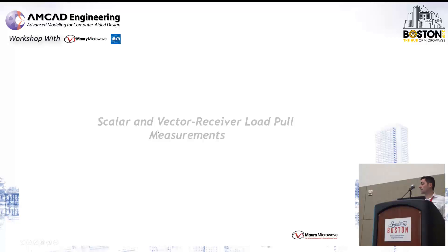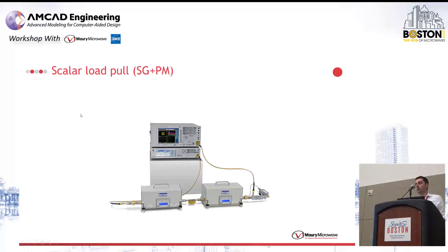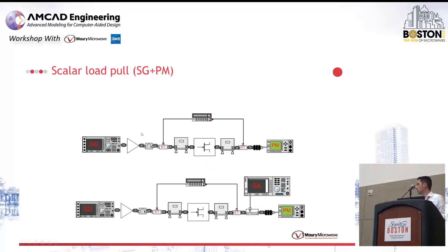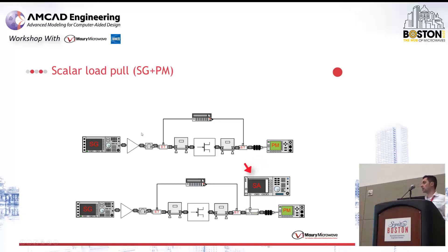In terms of the measurement, you have several kinds of systems. There are many different load pull techniques, but we can separate them into a scalar load pull system and a vector receiver load pull system. In a scalar load pull system, which is probably the most simple form of load pull, you basically use power meters for doing power measurements. The tuner changes your impedance. The tuner can change your load impedance and your source impedance. You have a power meter to measure the power. Alternatively, you can use spectrum analyzers to measure the spectrum and the linearity, such as in this schematic.